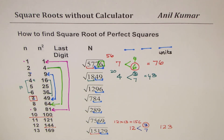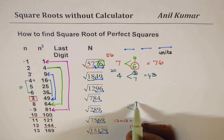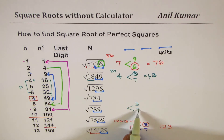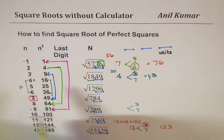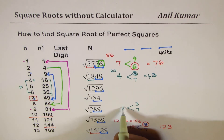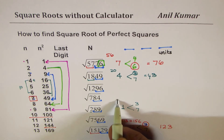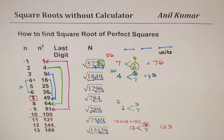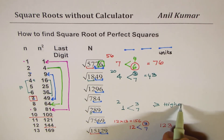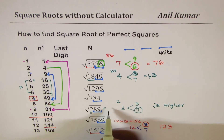Let's take a small number: 289. Last digit 9 means options are 3 and 7. The left group is 2. Since 1²=1 and 2²=4, the tens digit is 1. To decide between 3 and 7: 1×2=2. Since the left group 2 equals the product 2, we apply the rule — equal to or greater than means we take the higher number — so 7. The answer is 17.